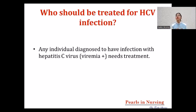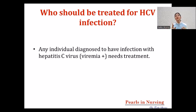Number one: who should be treated for HCV infection? Any individual who has got the infection — who is having the Hepatitis C virus, whether it is an active infection — they need treatment. If you remember, the diagnosis is a two-step process: number one, anti-HCV positivity; number two, HCV RNA reactivity. If both are positive and reactive, the person has the infection and requires treatment.